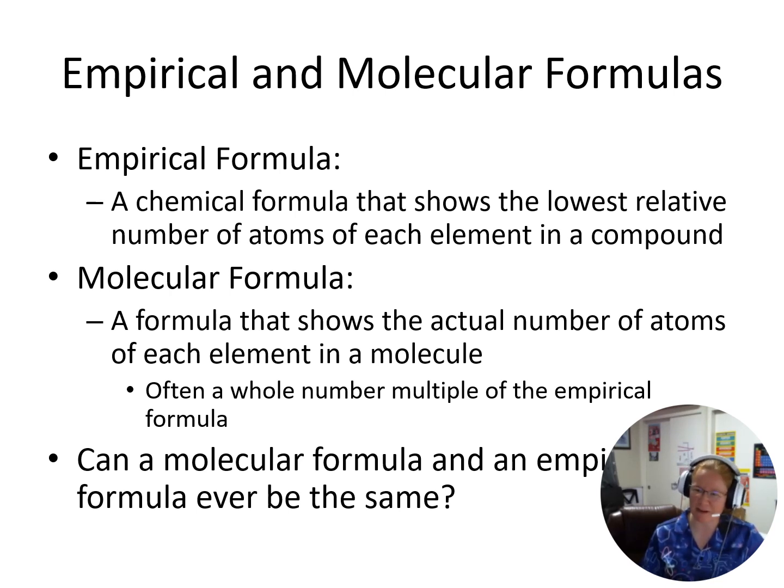There are definitely many, many cases where the empirical formula and the molecular formula are the same. For example, something like water, H2O. That's the lowest ratio I can have is two hydrogens to one oxygen. Can't get anything lower than that. Otherwise, I end up with a fraction of an oxygen and I can't have half of an atom.